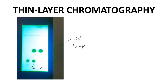What is happening with this plate? The TLC plate has a colorless dye. Under a UV lamp — specifically a UV lamp with a wavelength of 254 nanometers — the dye on the TLC plate glows green.